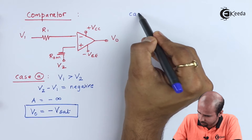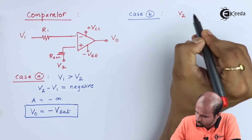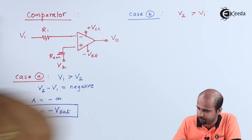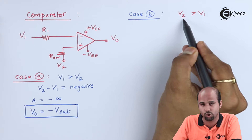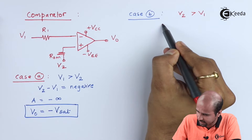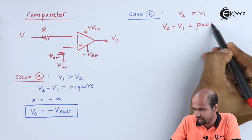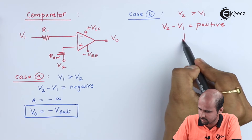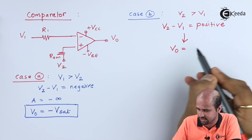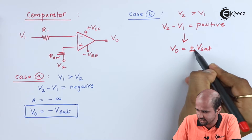In Case 2 (Case B), V2 is greater than V1 — the non-inverting terminal voltage is greater than the inverting terminal voltage. Now V2 minus V1 is positive. Therefore VO equals plus Vsat, not minus Vsat.